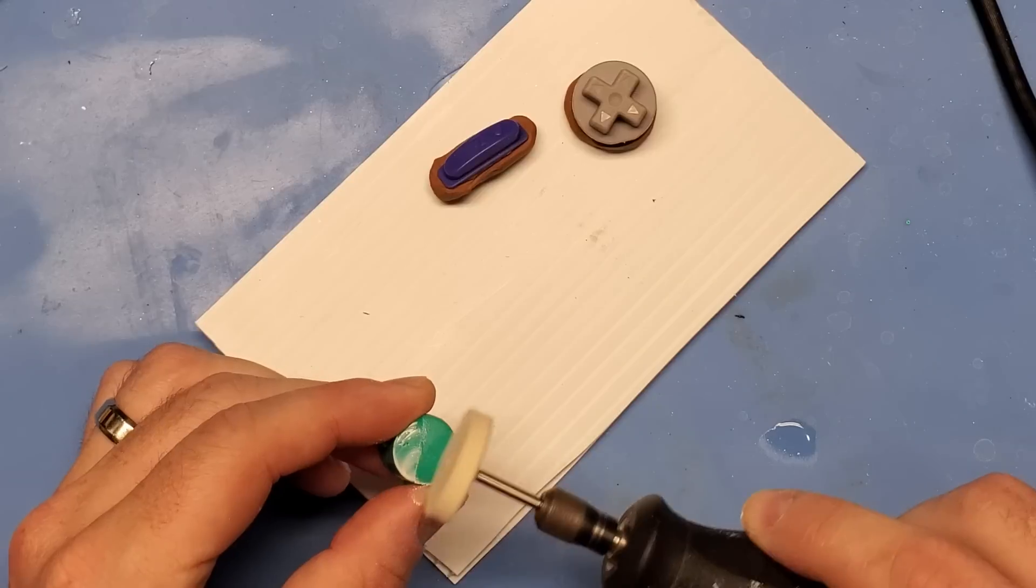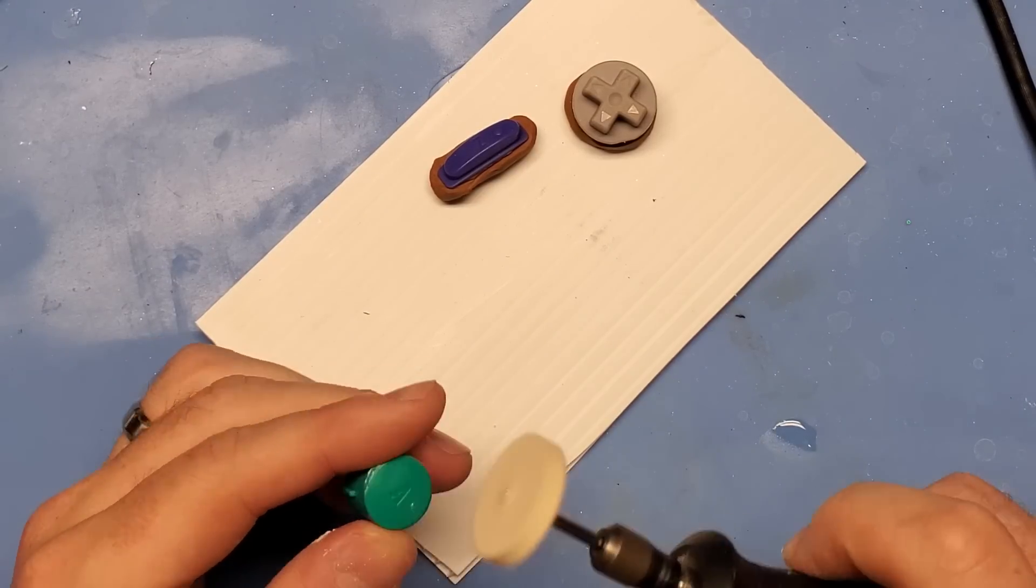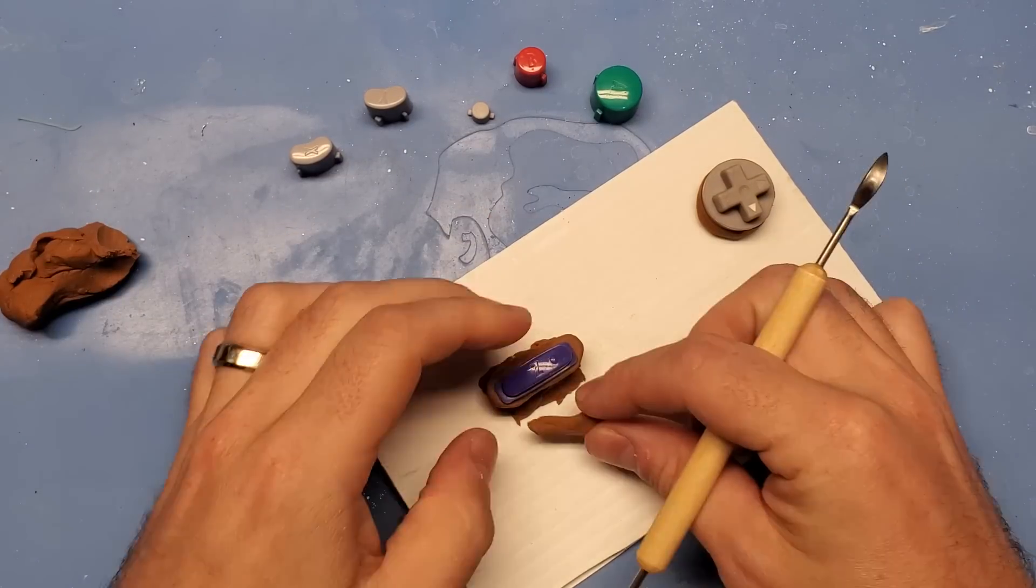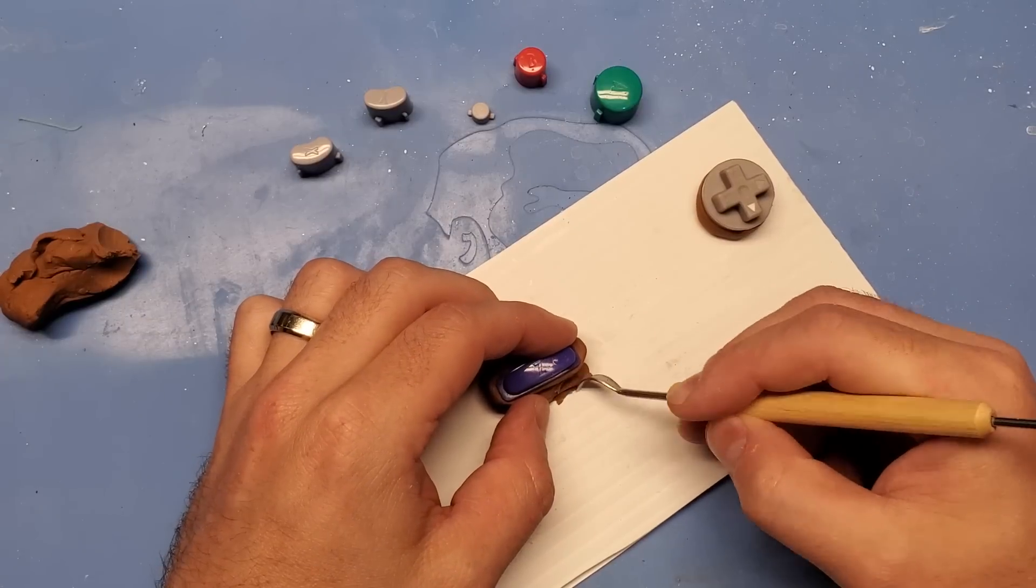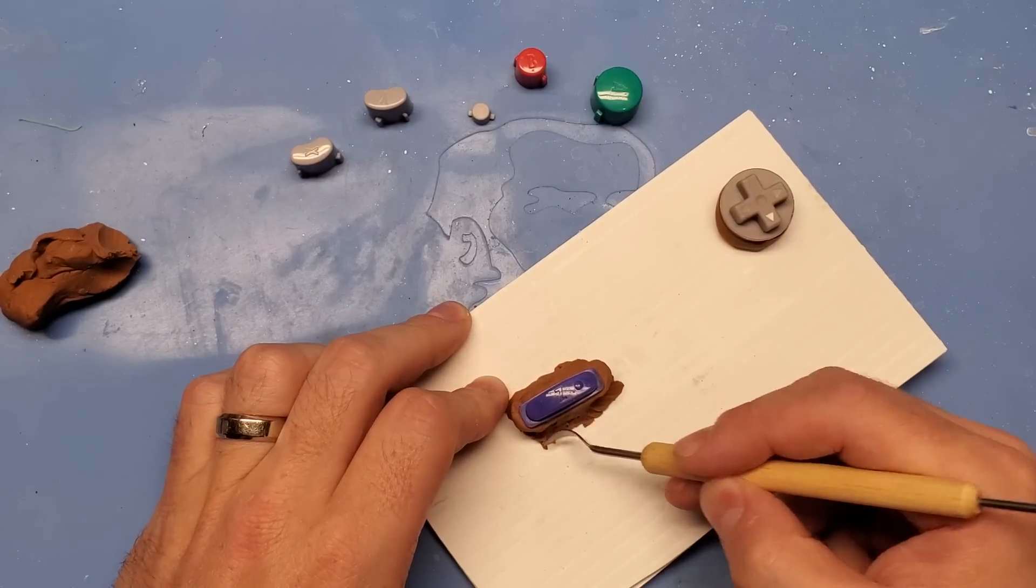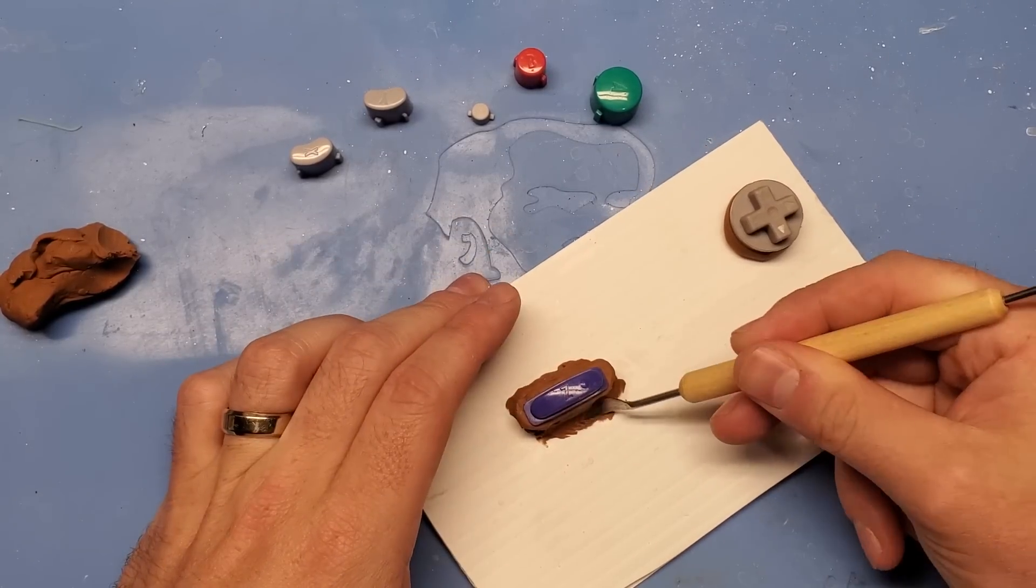So the first thing to point out here is you're going to notice I've packed the bottom of the buttons with some plastilina clay to make the process a little bit easier and use a little less silicone. Also you're going to notice that I've polished the top of the buttons with some polishing compound and my Dremel. This is going to make the tops really glossy and reflective, which is going to make those buttons really smooth, which we know we all want.